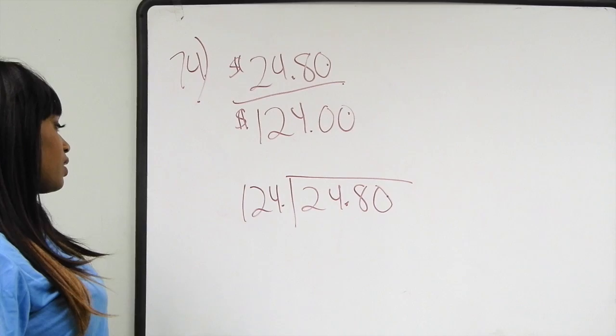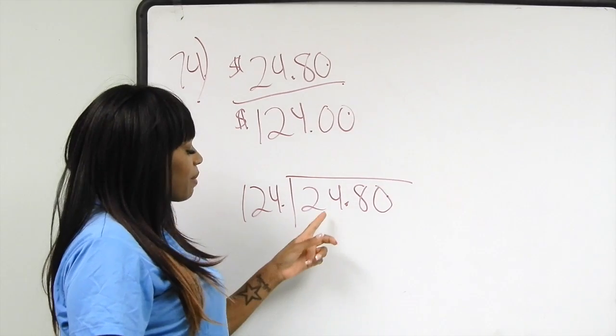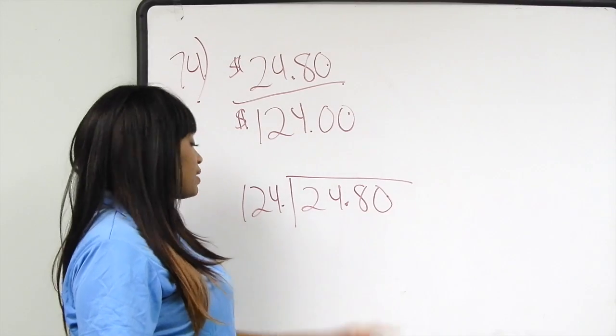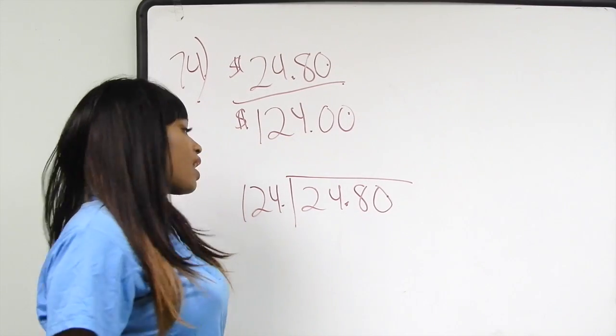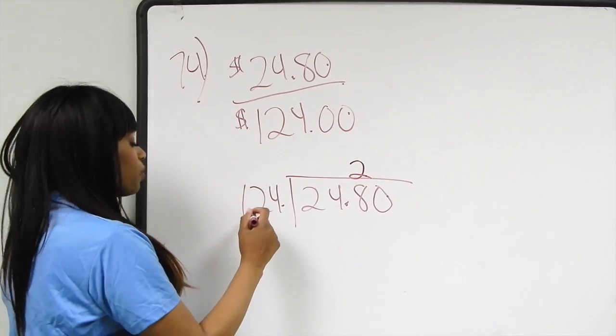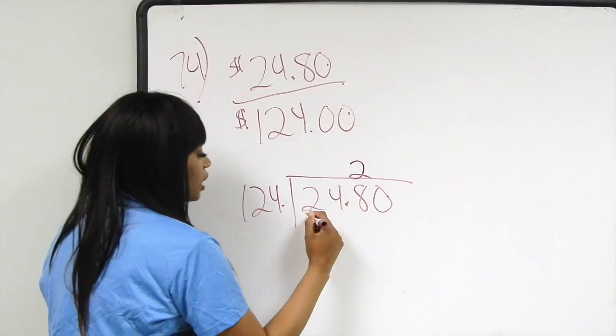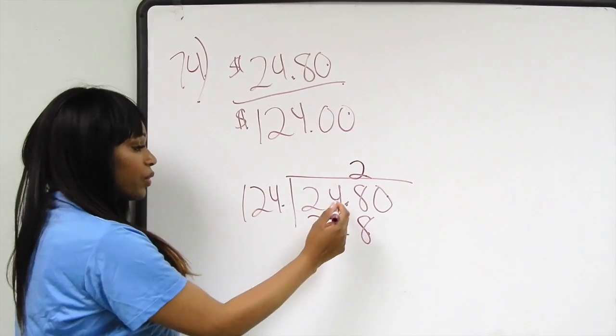We're going to divide 124 into $24.80. 124 goes into 248 two times, and it's going to be even. 124 times 2 gives us 248. 248 minus 248 equals zero.